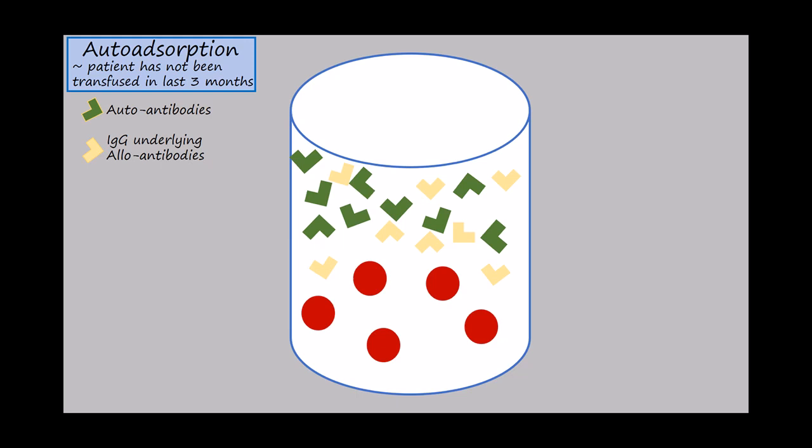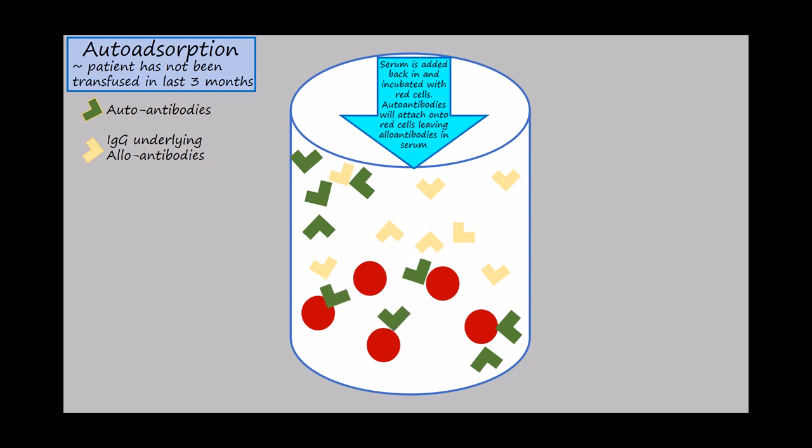The red cells are washed to remove the reagent and then serum is added back in and incubated with these red cells. The autoantibodies will attach to the red cells, leaving these underlying alloantibodies in the serum, as you can see here.